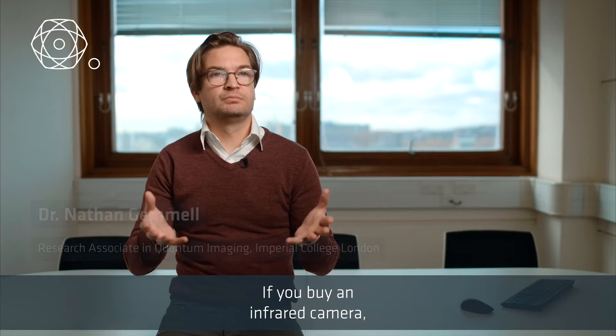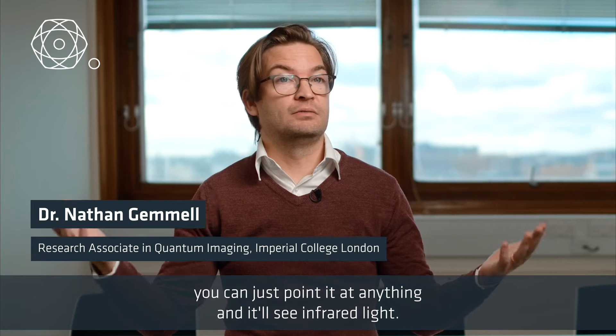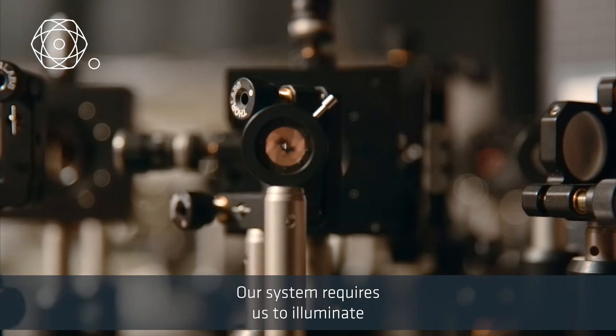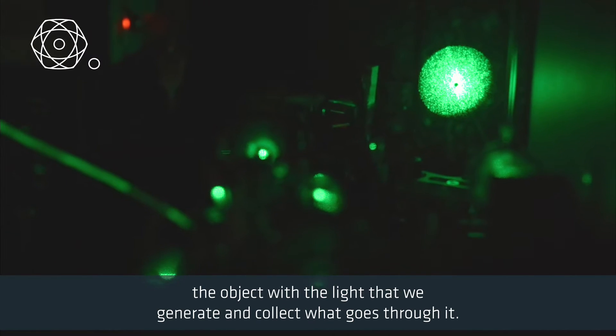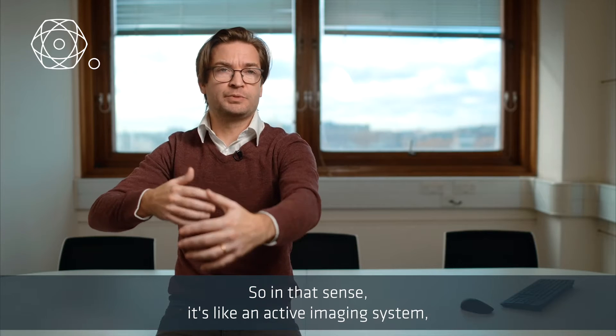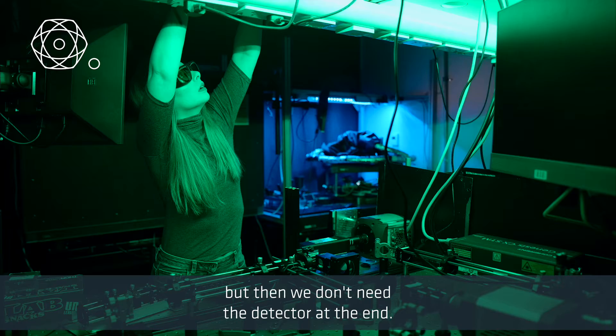If you buy an infrared camera, you can just point it at anything and it'll see infrared light. Our system requires us to illuminate the object with the light that we generate and collect what goes through it. So in that sense, it's like an active imaging system, but then we don't need the detector at the end.